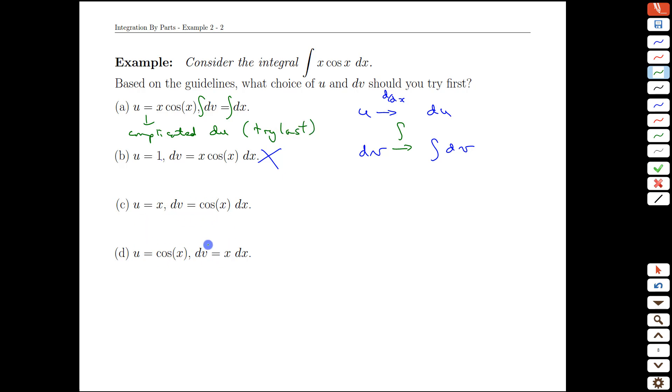So that leaves us with a 2 here. If we have dv equals cos, we can certainly integrate cos, no problem. And if I differentiate x, I get 1.